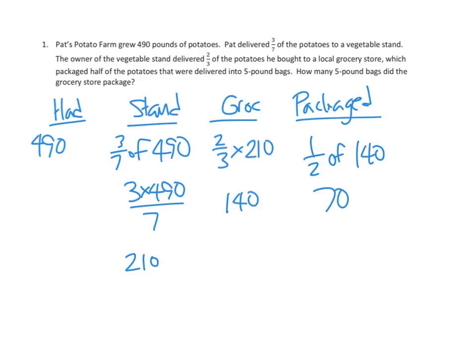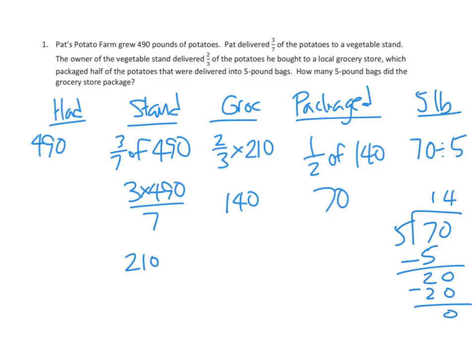Oh, and they packaged them in five-pound bags. Maybe I should have a last step here. Five-pound bags. So let's see. That's 70 divided by five. We'll do that here on the side. It's one, five, two-tens, 21s, four, done. Fourteen.